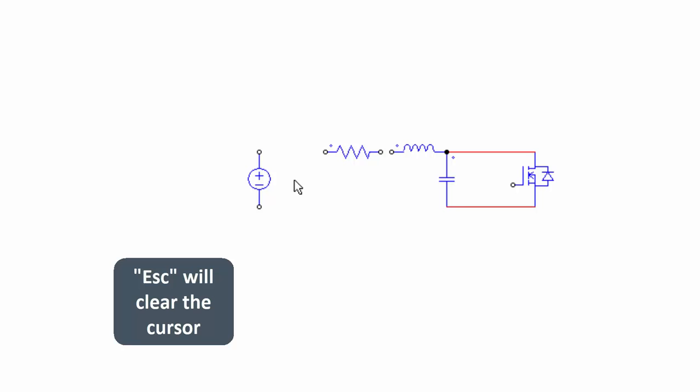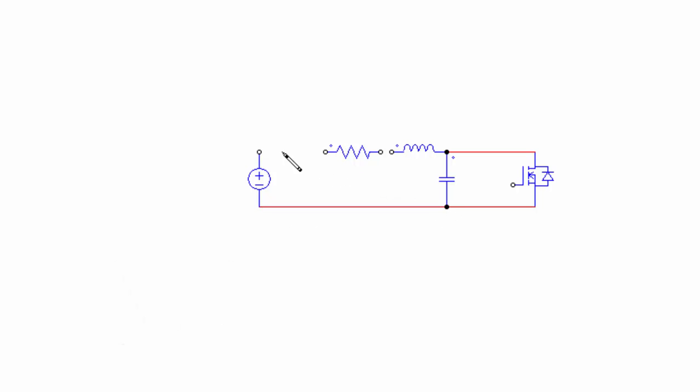If we hit escape, we clear our cursor, and we can place new things. I've also got the wire command bound to my hotkey W, so I can just hit W and bring these all up. And then I can connect those up there, and then I can also place a ground.